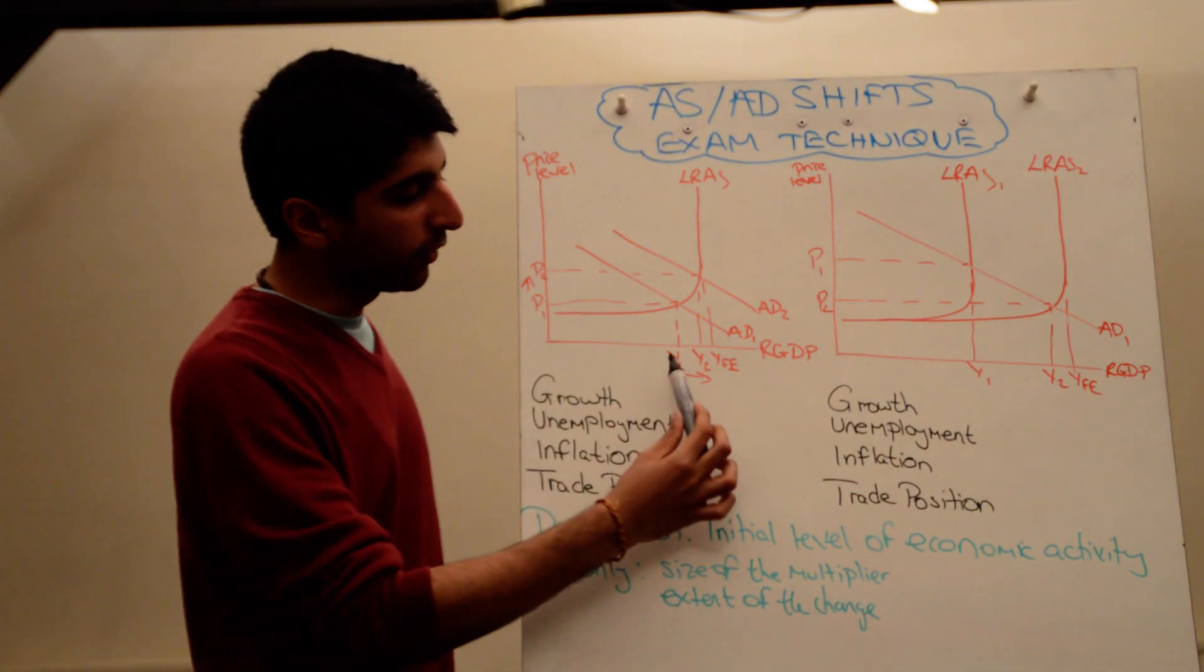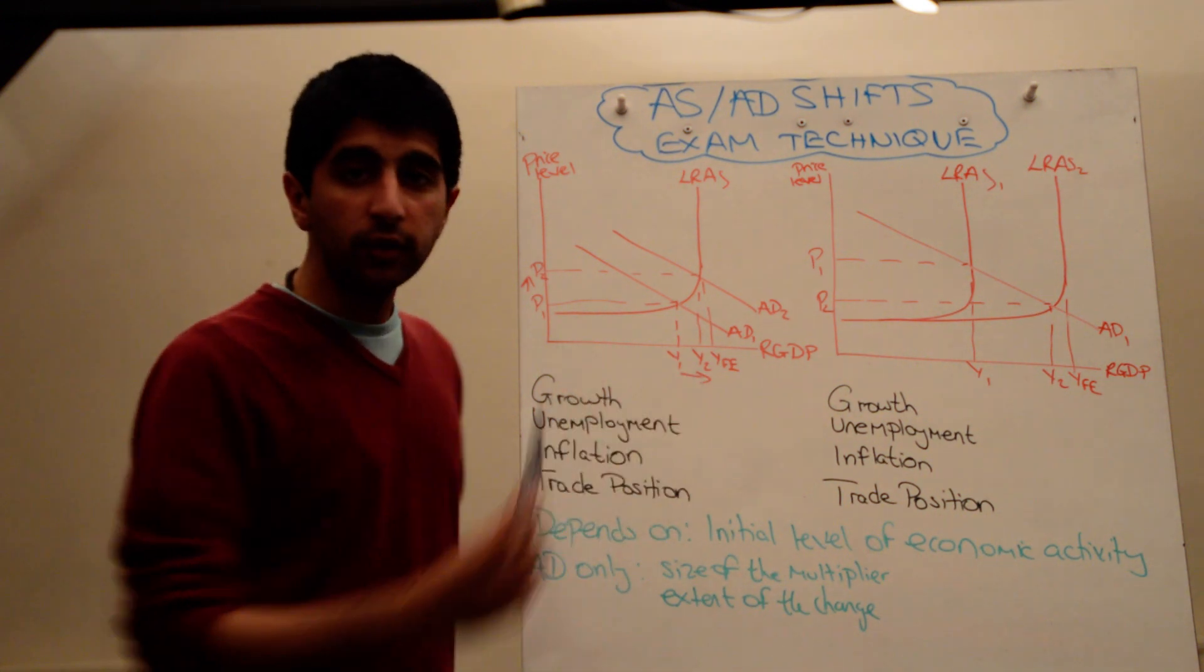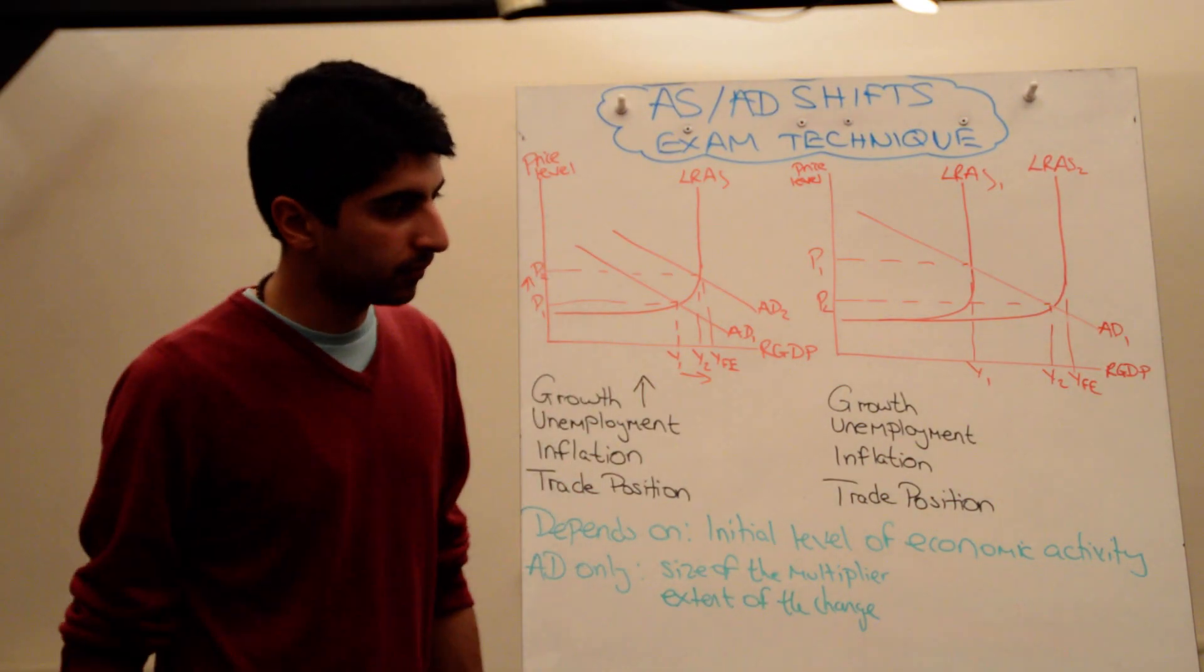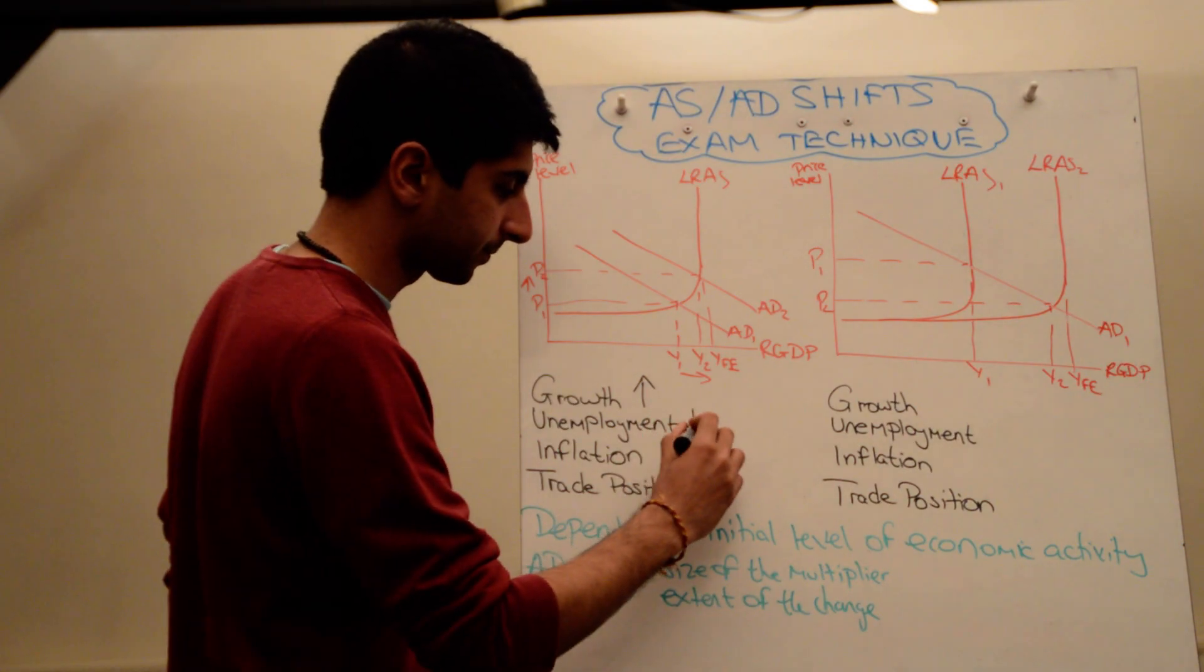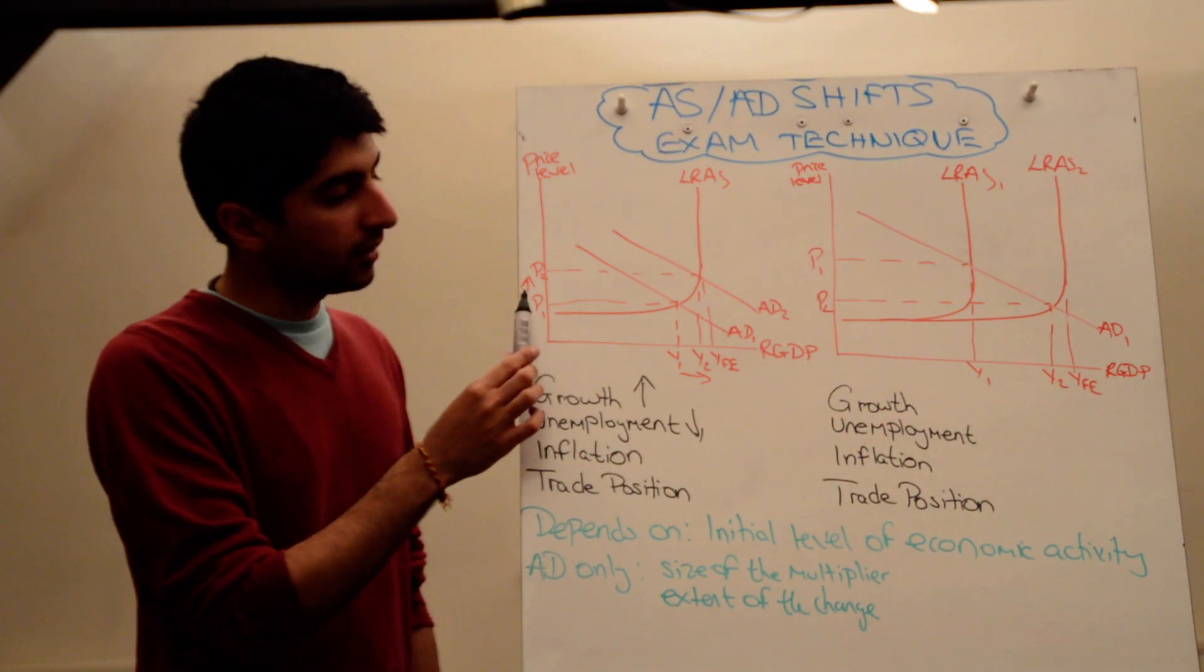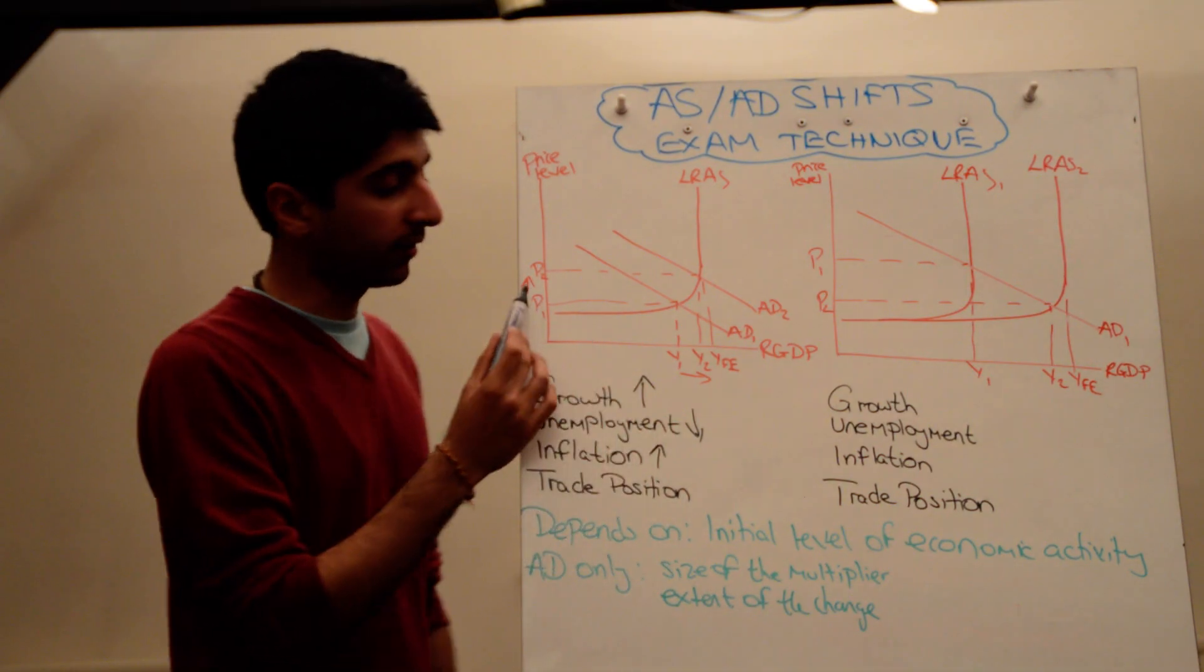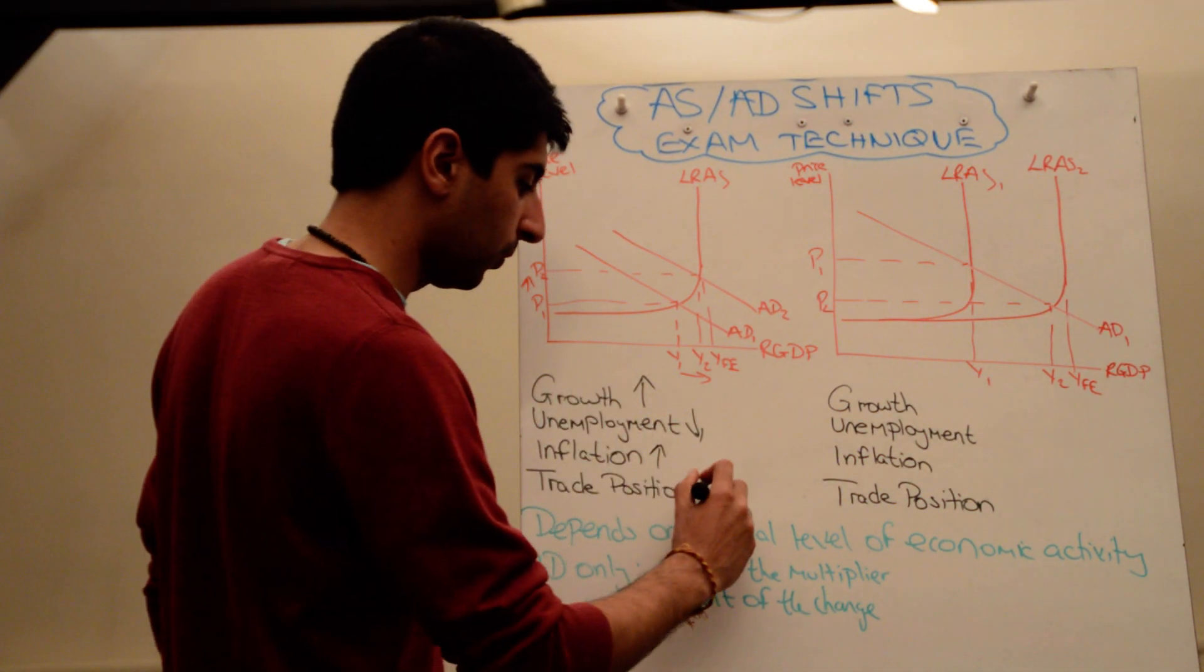Well, we can see on the diagram there is going to be an increase in growth. Real GDP increases from Y1 to Y2, so growth in the economy increases. Unemployment in the economy is going to decrease because of an increase in growth. Inflation, as you can see from the diagram, is going to increase. The price level increased from P1 to P2, and the trade position is actually going to worsen.